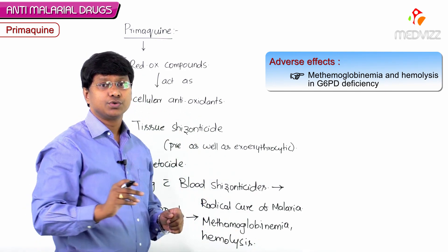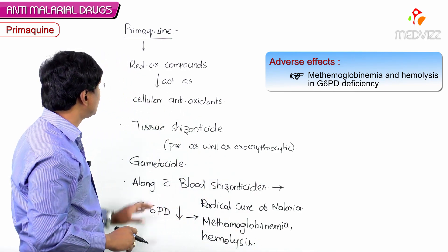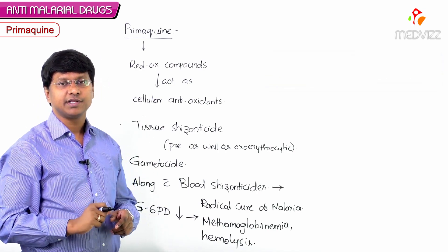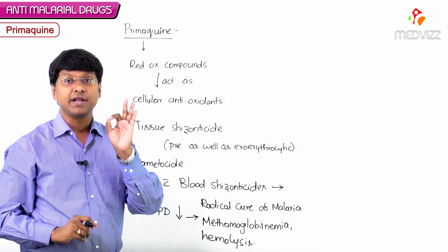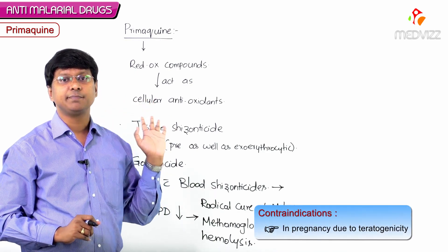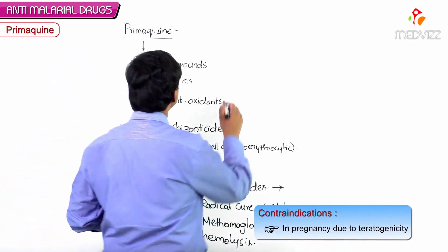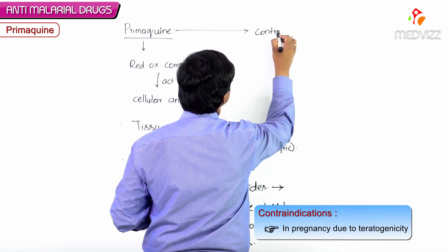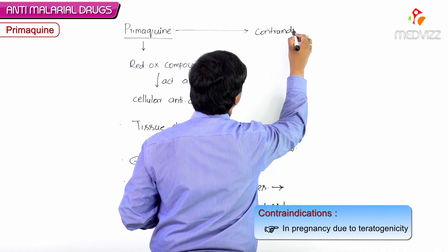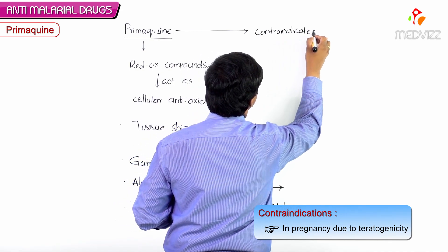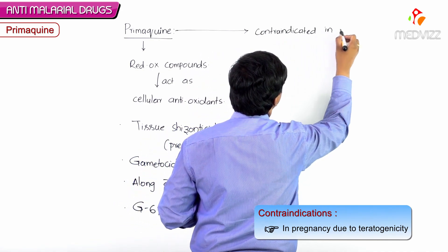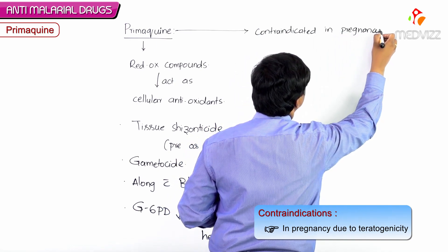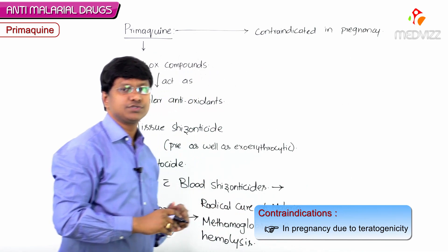Primaquine will also cause hemolysis in G6PD deficient patients. Another very important point is that primaquine is contraindicated in pregnancy.